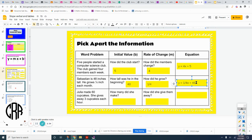So let's look at Julia. Julia makes 60 cupcakes. She gives away three cupcakes each hour. So how many cupcakes did she make? She started with 60. She gave away - that's subtraction. She gave away three cupcakes each hour. So y equals - how many did she give away? She gave away three cupcakes each hour, but she started with 60.